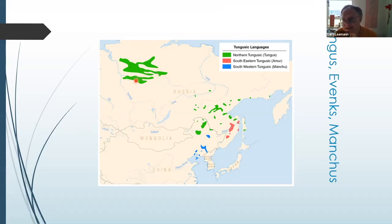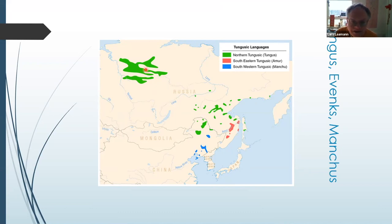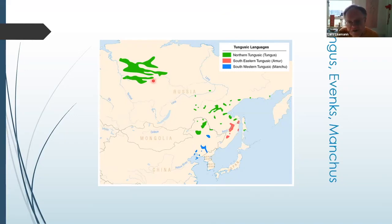In later centuries, cities were created by Russia to exploit the natural resources that existed in these places — that could be wood, furs, and later mineral resources including oil.